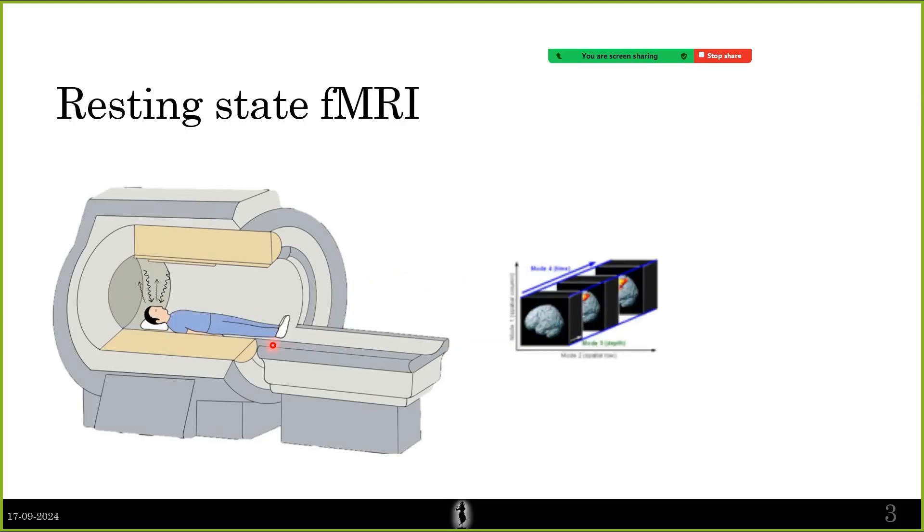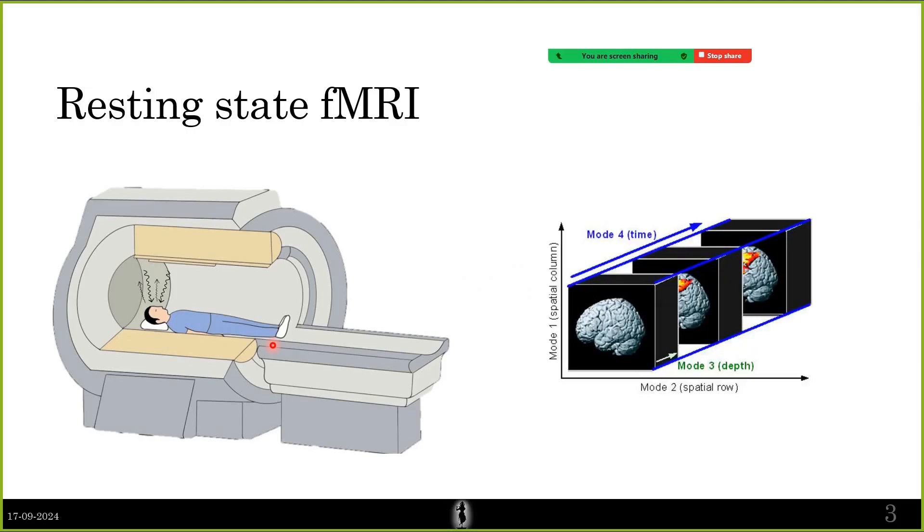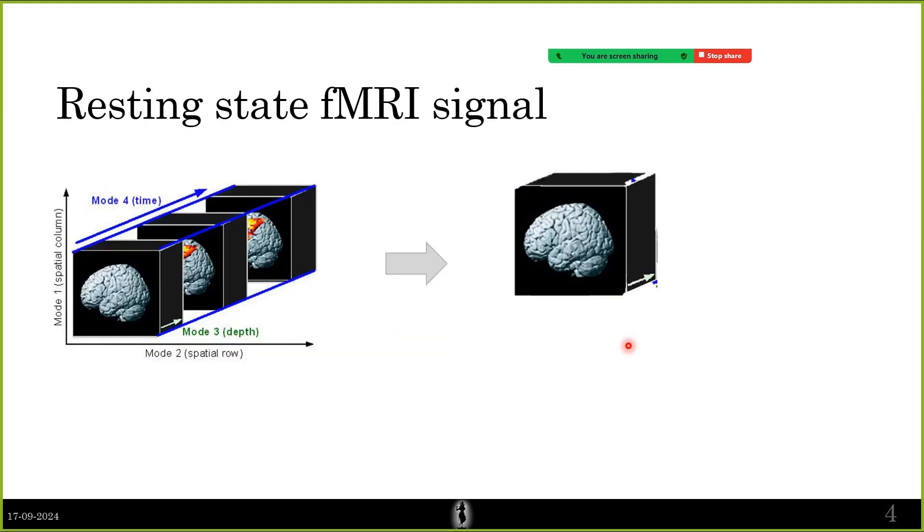When you do this, you get a 4D signal. The MRI scanner records this 4D signal, which is basically a three-dimensional brain across time - that's four dimensions: three-dimensional brain across time. This signal can also be visualized as a three-dimensional volume, your three-dimensional brain as a volume.